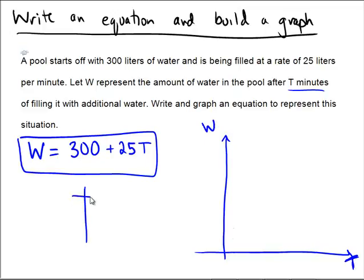If I were to replace t with 0, we'd get 300 plus 25 times 0, which is 300. So along the w-axis, I'm going to go up to a point here, and we're going to plot the point 0, 300.